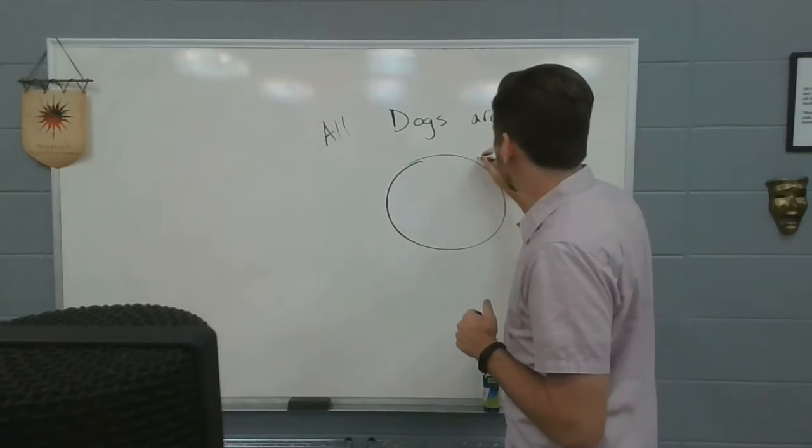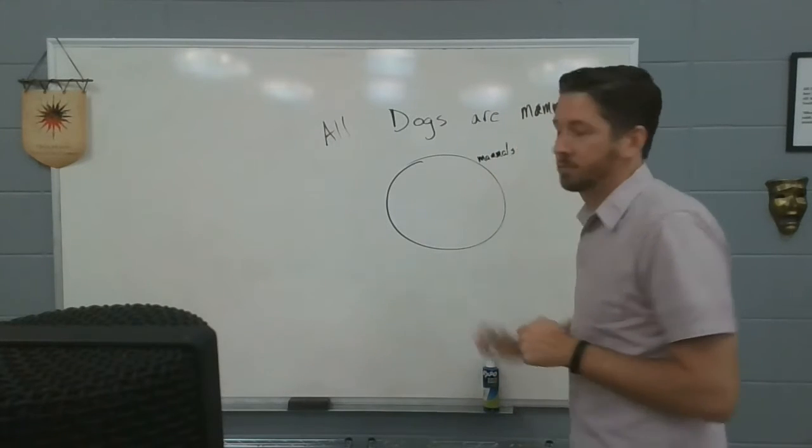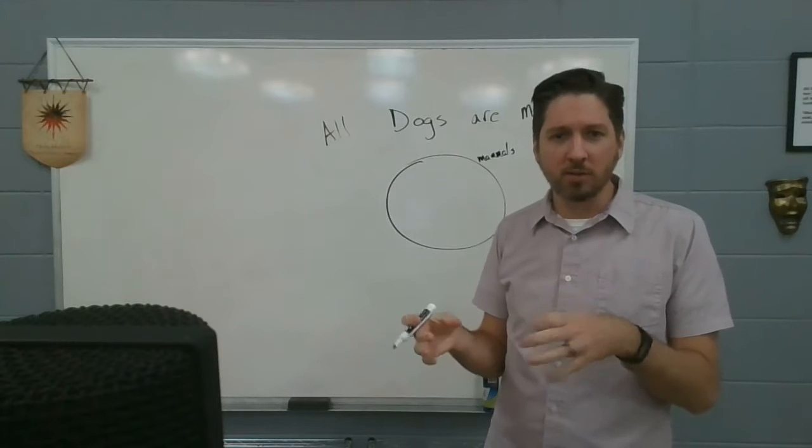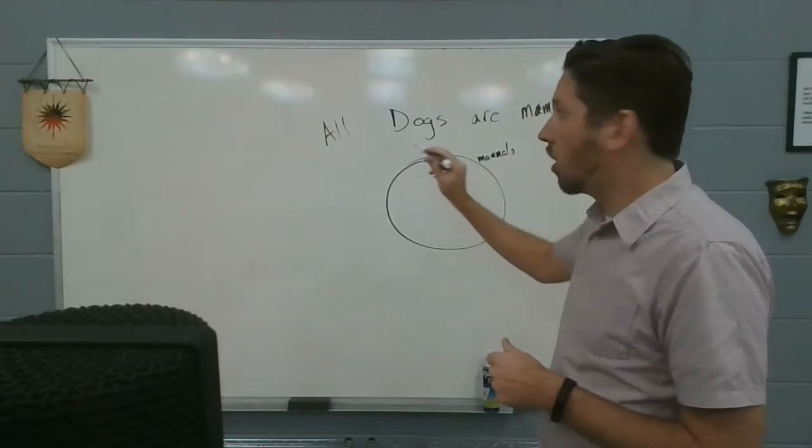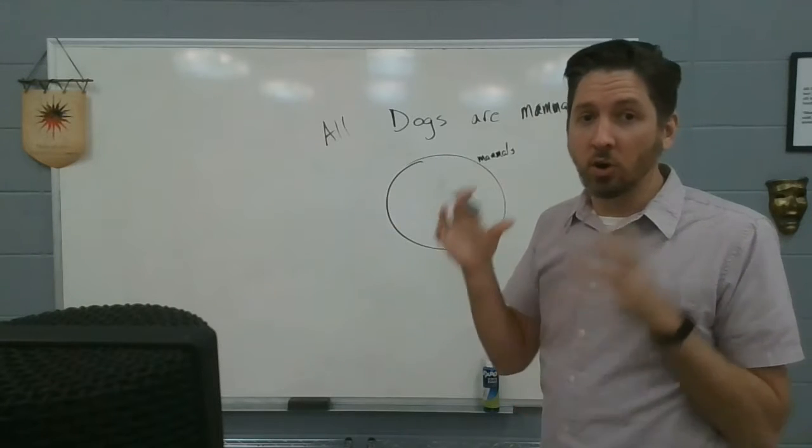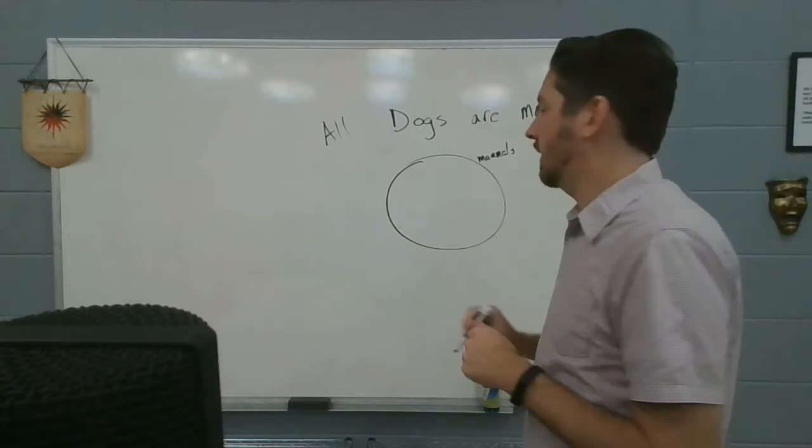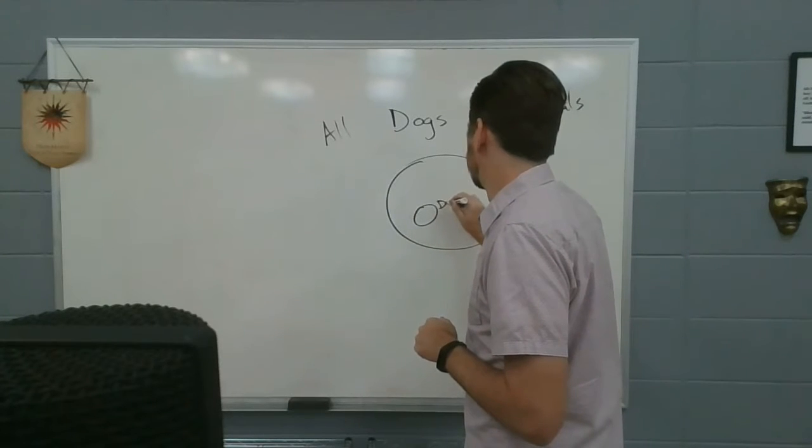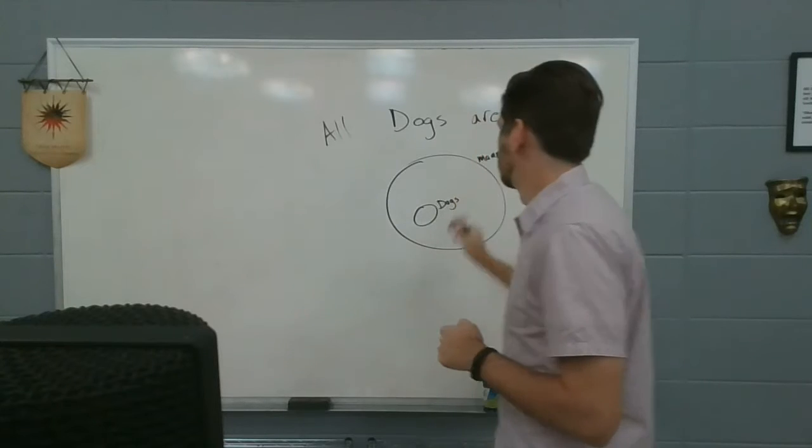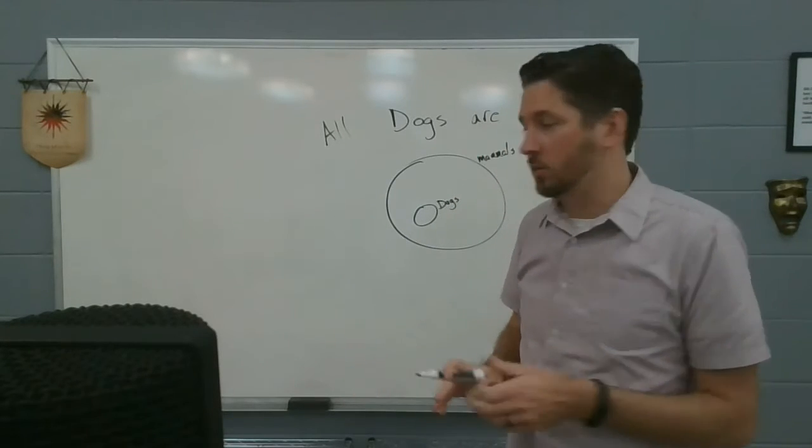And I'm going to draw a circle to represent the category of dogs. Now, all dogs are mammals. So, the dog circle, that category exists where? Inside the mammal circle. So, here are my dogs. Done. I drew the sentence. And that's the basic basis of a Euler diagram.